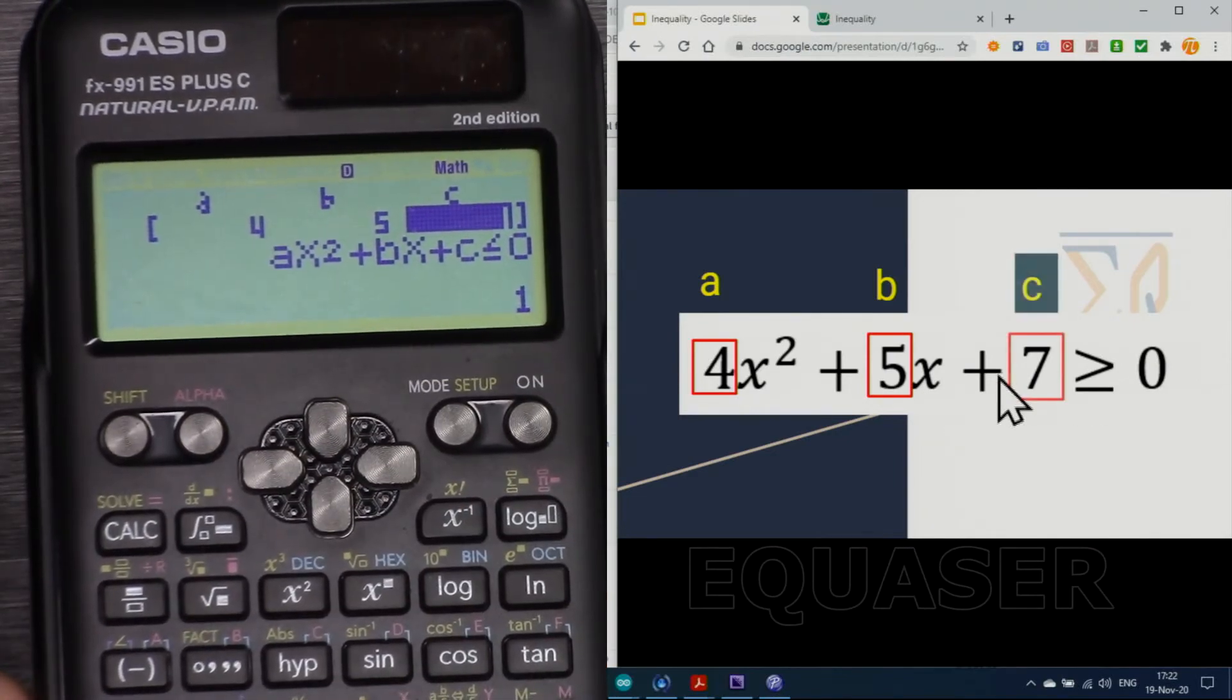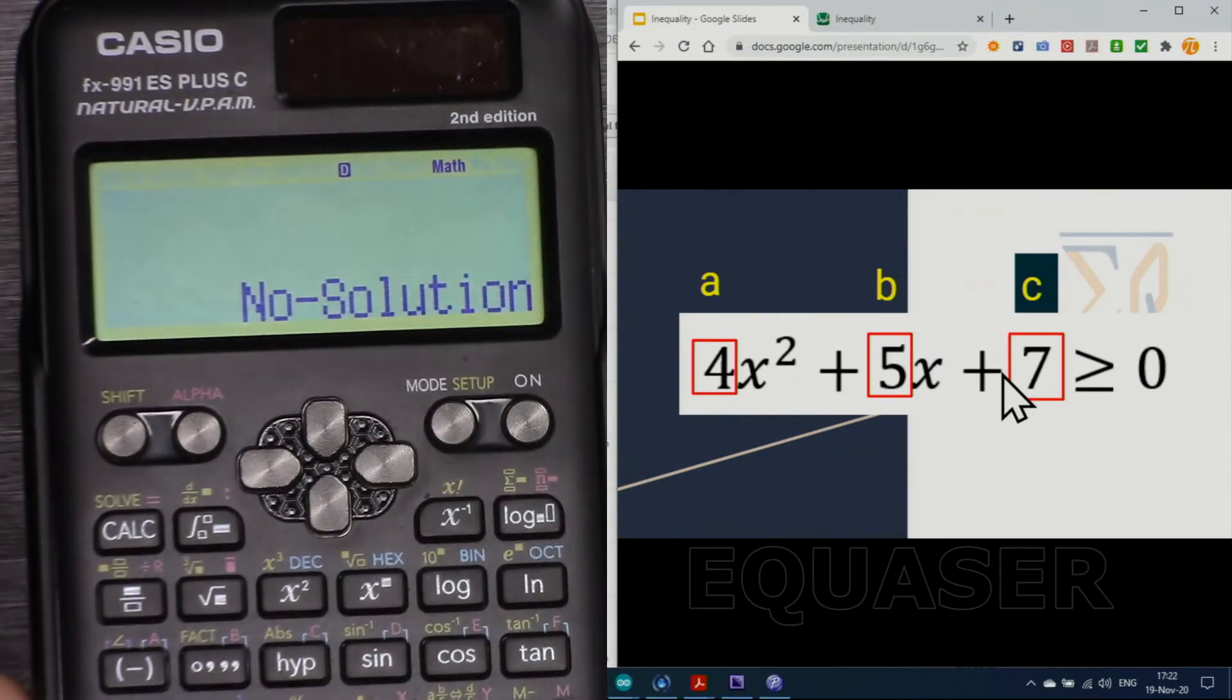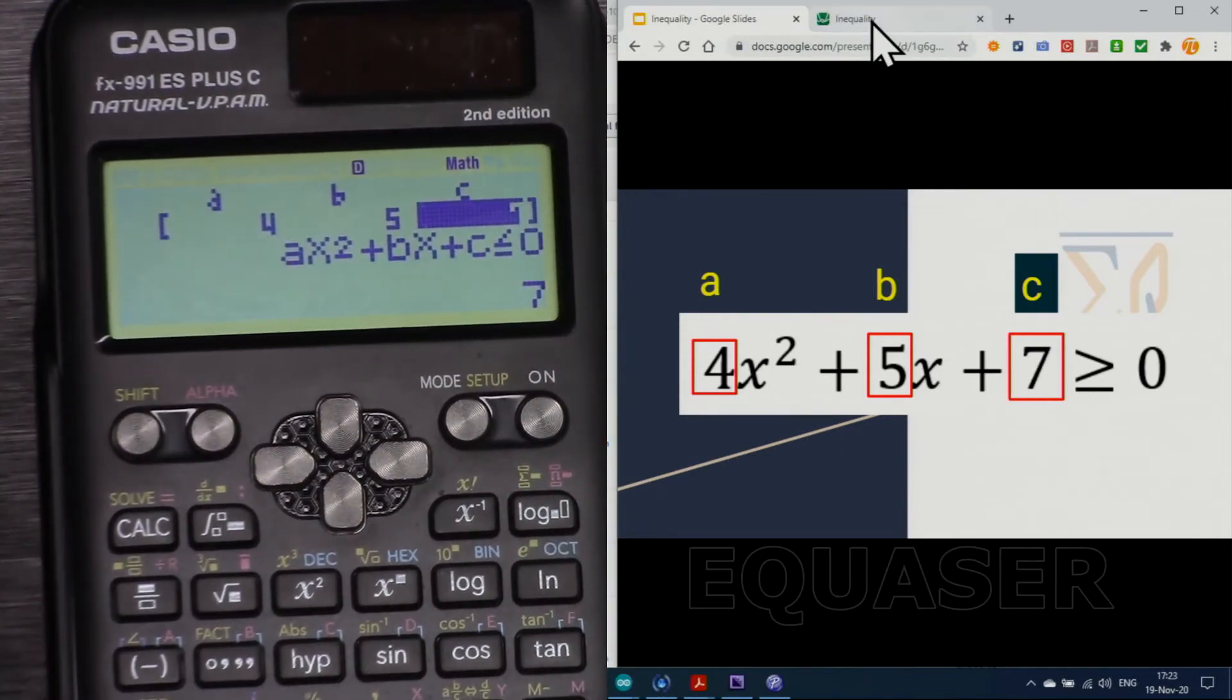And then for c, 7, and then press equal. And as you can see it says no solution. And let's have a look.